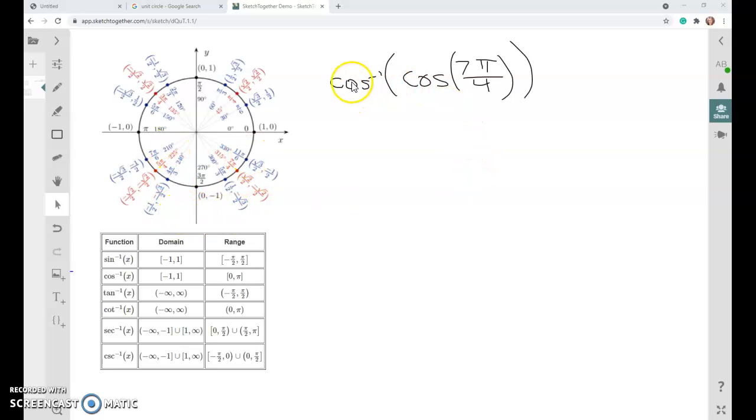For 1.7.4 it's asking you to find the inverse cosine of the cosine of 7π over 4. There are a couple of questions like this where it'll have the inverse and then the regular function. To start, you find the cosine of 7π over 4. With composite functions, you always start from the inside and work your way outside.